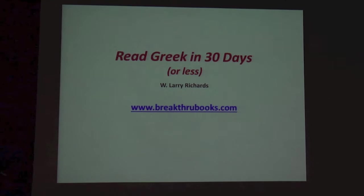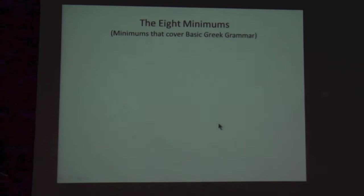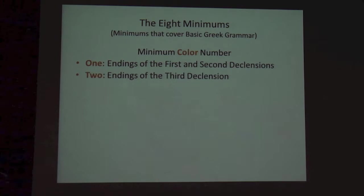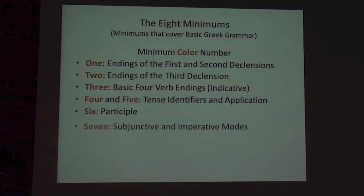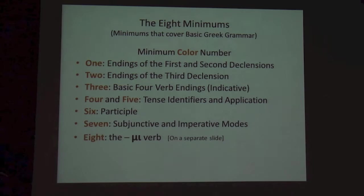The eight minimums I'm listing here: Minimum one, the endings of the first and second declensions. Two, the endings of the third declension. Then minimum three, the four basic verb endings in the indicative mode. Four and five, which are really the heart of my method, the tense identifiers and their application. Then the participle and the other two modes in minimum seven. And then on a separate page, that very difficult and complex mu verb.